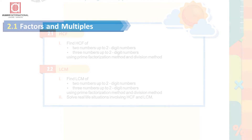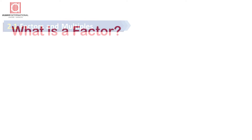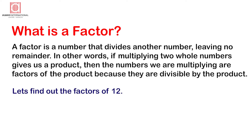Factors and multiples. Let's reinforce what a factor is. A factor is a number that divides another number leaving no remainder. In other words, if multiplying two whole numbers gives us a product, then the numbers we are multiplying are factors of the product, because the product is divisible by them.